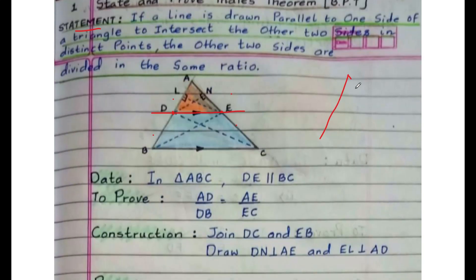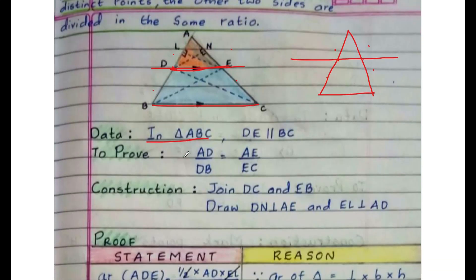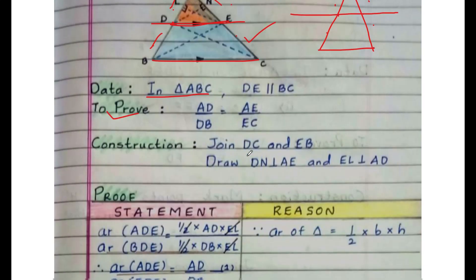Students, draw a triangle and draw a line parallel to one side intersecting at two distinct points — it will divide the other two sides in the same ratio. In triangle ABC, DE is parallel to BC. By looking at the figure, write the data, to prove, and construction — you should not memorize the theorem blindly. To prove: AD/BD equals AE/EC.